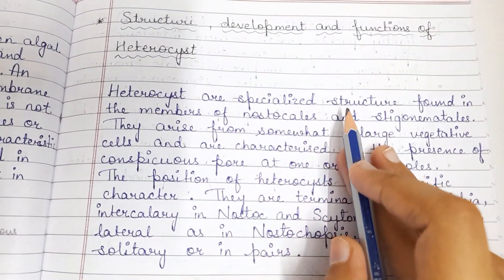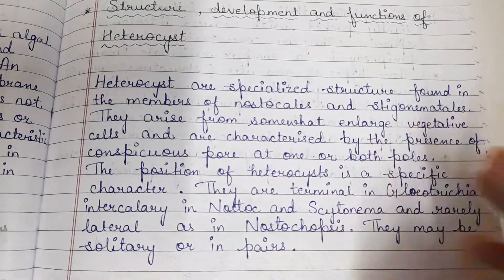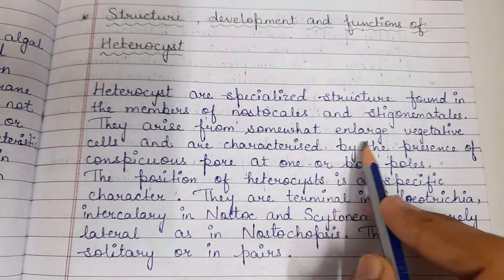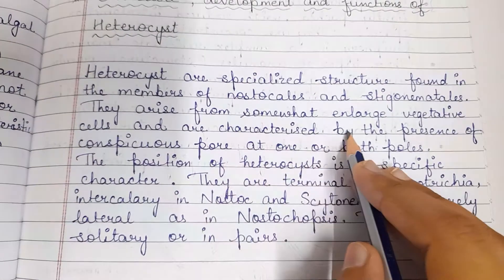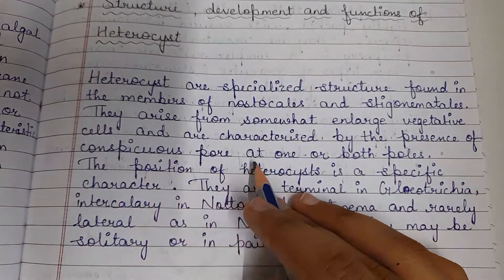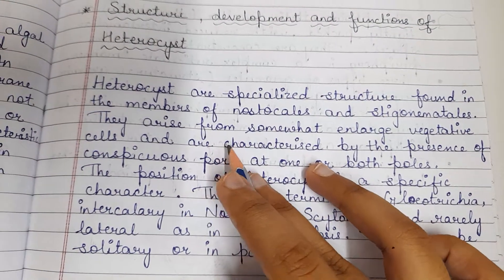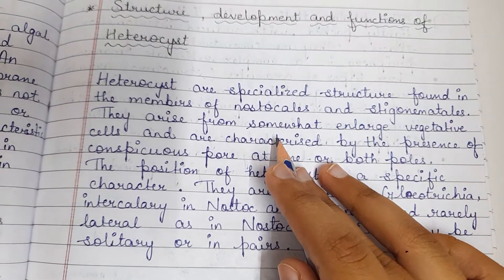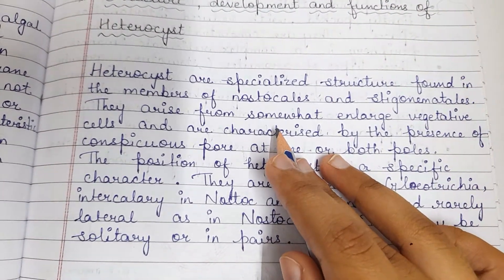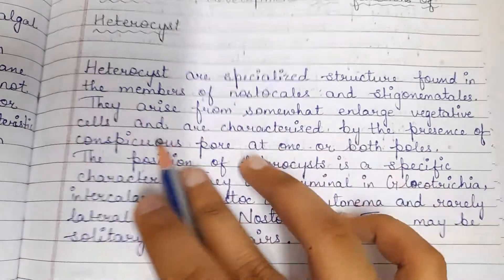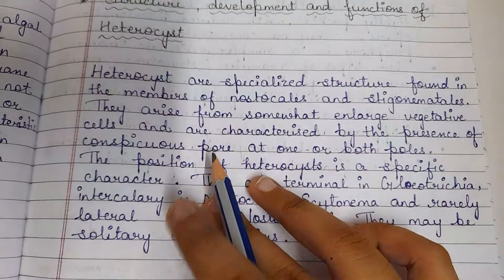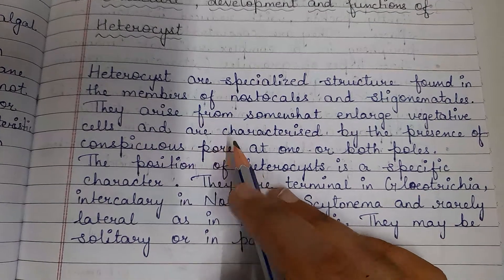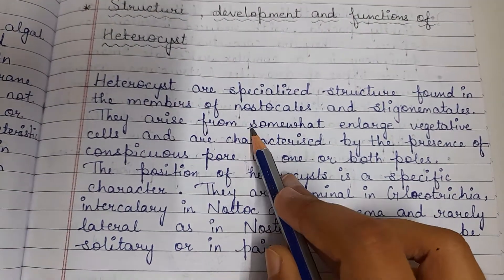Heterocysts are specialized structures found in Nostocales and Stigonematales. They arise from somewhat enlarged vegetative cells and are characterized by the presence of a conspicuous pore at one or both poles. Conspicuous means easily noticeable, and the pores are located at the organism's two poles.